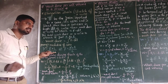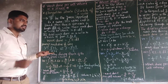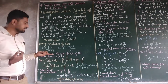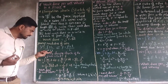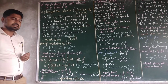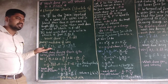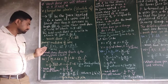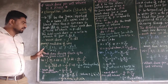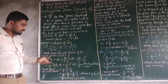Here DL is the change in length. Rearranging Young's modulus expression Y equals F·L / (A·DL), we get F equals Y·A·DL divided by capital L.